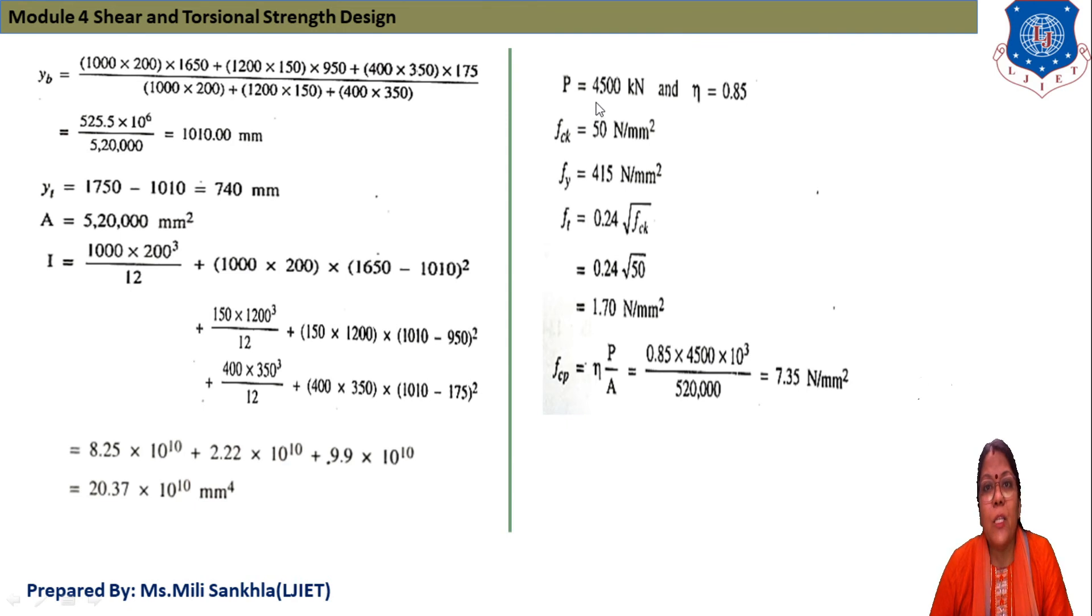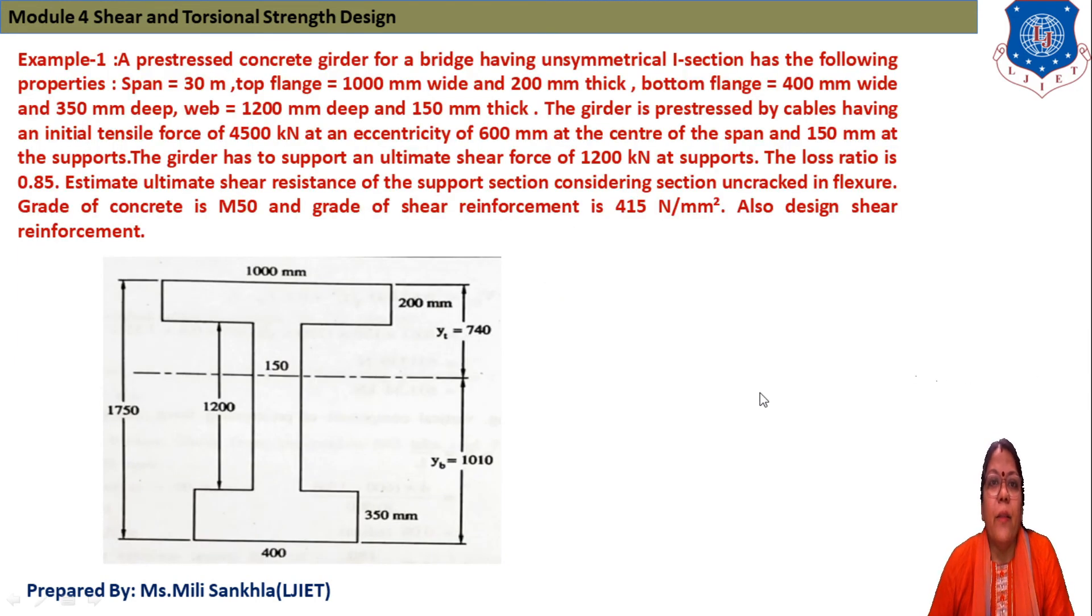We write down the properties that given in data. P is equal to 4500 kN, ETA that means 0.85 loss ratio, FCK is given 50, FY 415 and FT. Because here the uncracked section is given, first of all we find out tensile stress that is 0.24 under root FCK and that is 1.70 N per mm square. And according to this we find out FCP, that is ETA P by A. Because loss ratio is given 0.85, we find out effective compressive stress ETA P by A, 0.85. Prestressing force is given and A is equal to area of this I girder. We get 7.35 N per mm square.